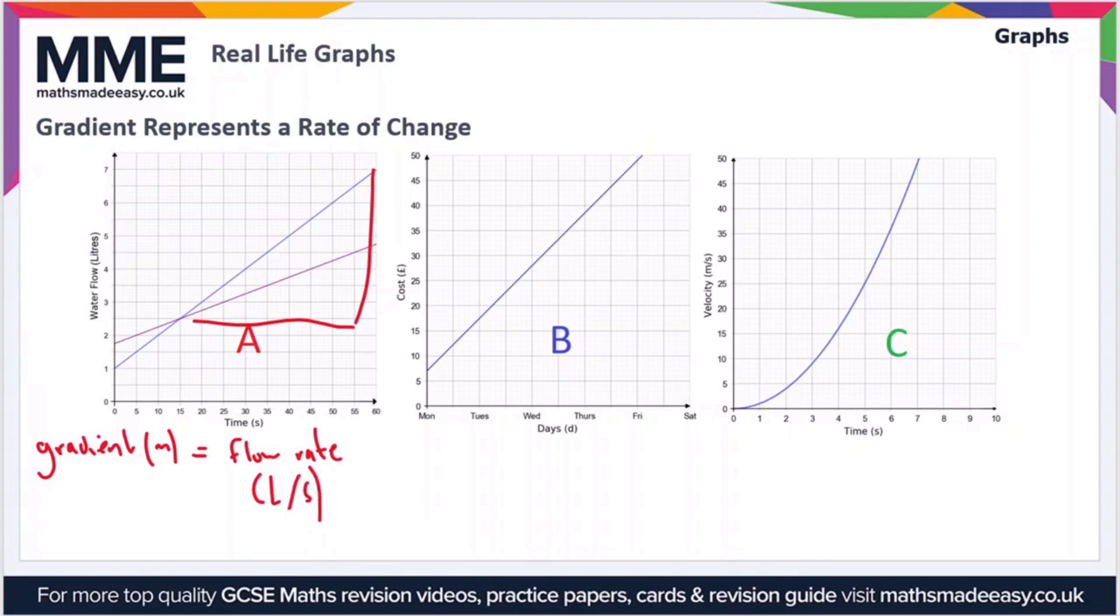And then moving on to B. In B, we have the cost in pounds against the time in days. So M would be the cost per day, and you could measure that in pounds per day.